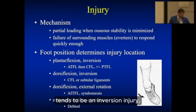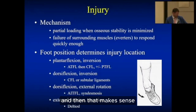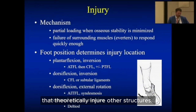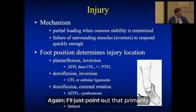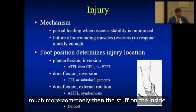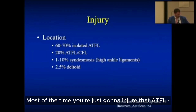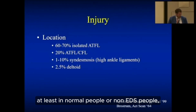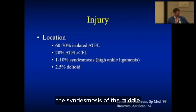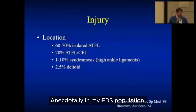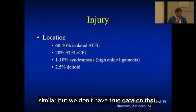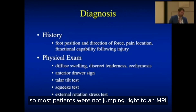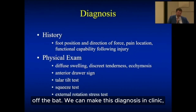The mechanism for acute ankle sprains tends to be an inversion injury — the foot points inward — and that makes sense that the structures on the outside get hurt. Primarily you're injuring the stuff on the outside much more commonly than the inside. The syndesmosis and deltoid are less commonly involved. In my EDS population, I think this is probably similar, though we don't have true data on that. Diagnosis is primarily based on history and clinical exam, so most patients don't need an MRI right away — we can make this diagnosis in clinic.